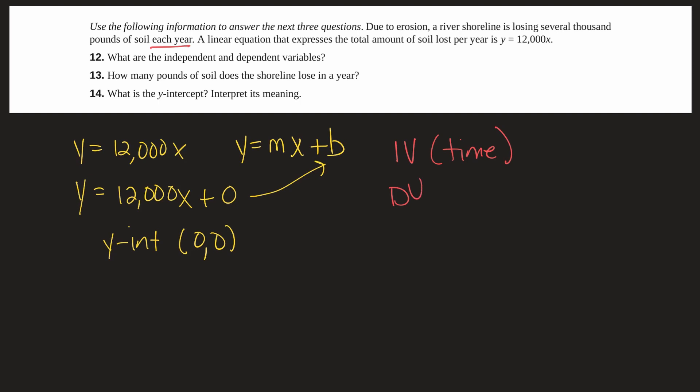The dependent variable is pounds of soil lost. The amount of soil lost is dependent on time. And of course they estimate that it's 12,000 pounds per year.